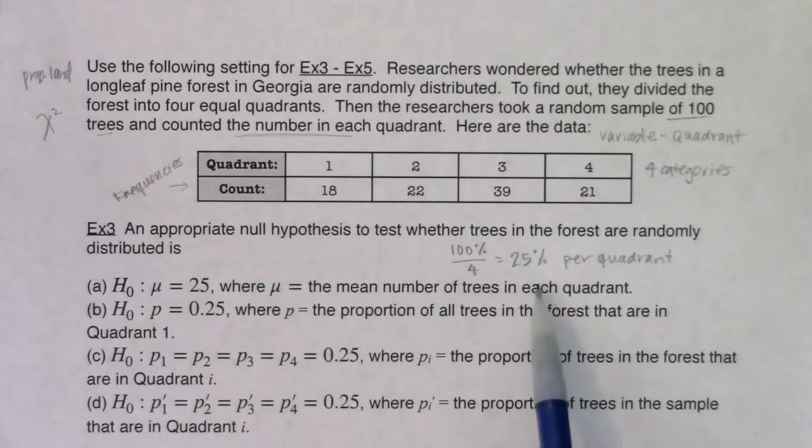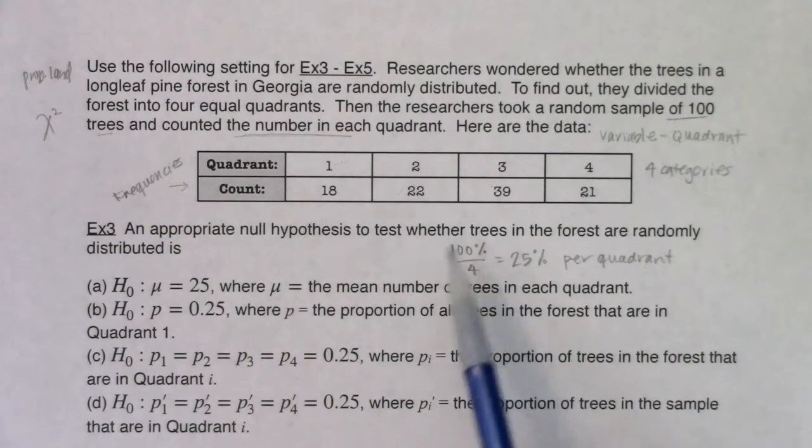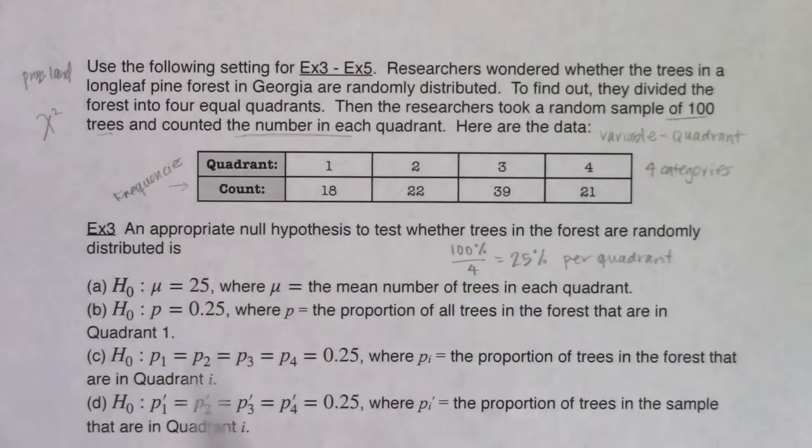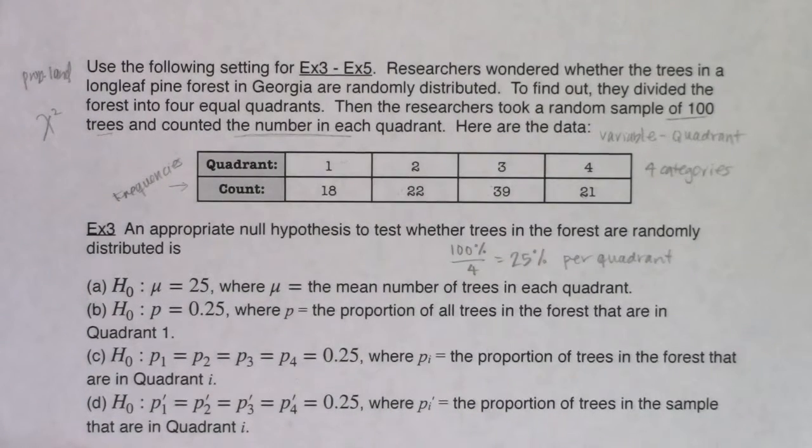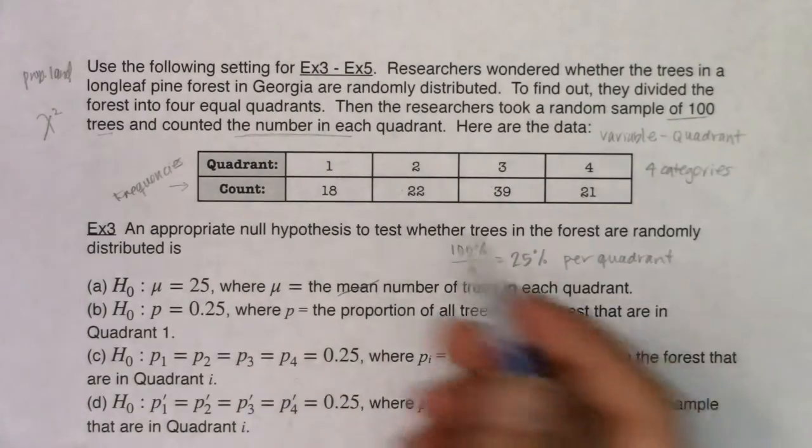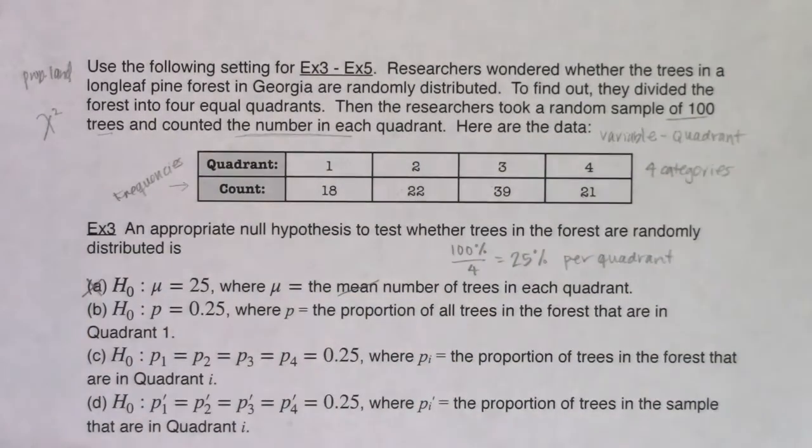That would be the null proportions that I would be looking at here. So let's see what falls in there in terms of a, b, c, or d. So the first thing I notice in a when I look at it, H sub zero, we got the null mu equaling 25, where mu is the mean number of trees in each quadrant. Well, I'm not talking about means, so that is gone.